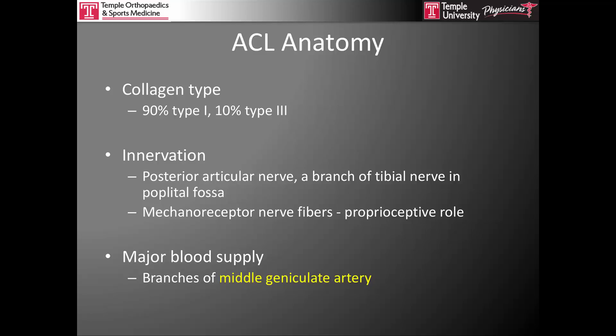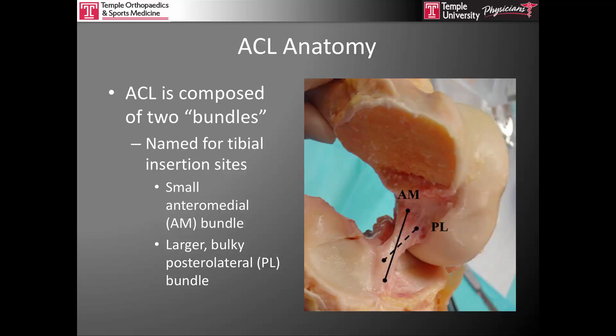Its major blood supply, for both the anterior and posterior cruciate ligaments, comes from branches of the middle geniculate artery. The ACL is composed of two separate bundles named for their tibial insertion sites. There is a smaller anteromedial bundle that inserts anterior and medial on the tibial insertion, and a larger, more bulky posterolateral bundle that crosses behind the anteromedial bundle when the knee is flexed.